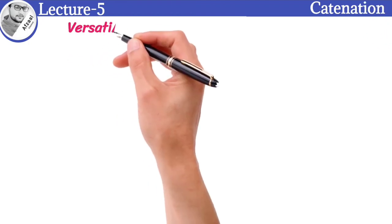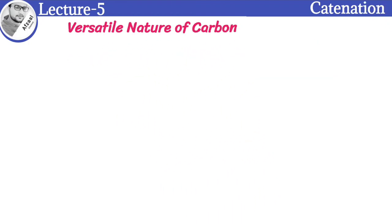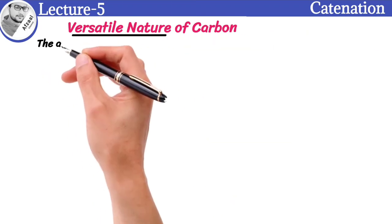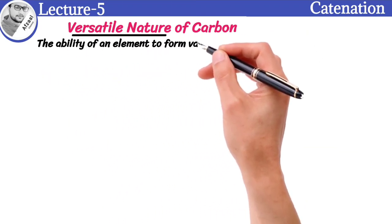Before going to discuss catenation, we must learn about the versatile nature of carbon. The word versatile nature means the ability of an element to form various types of compounds.